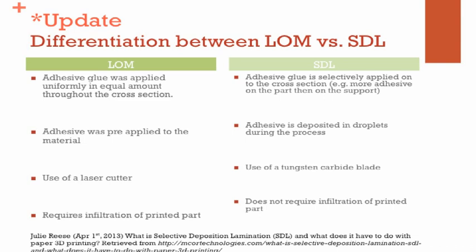Next, for LOM, it uses a laser cutter to cut because LOM can use other materials other than paper. However, for SDL, it uses a tungsten carbide blade instead.